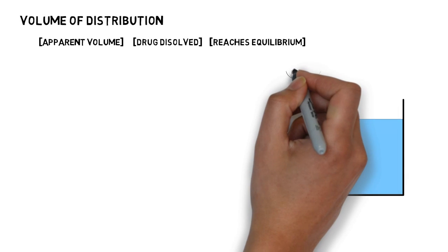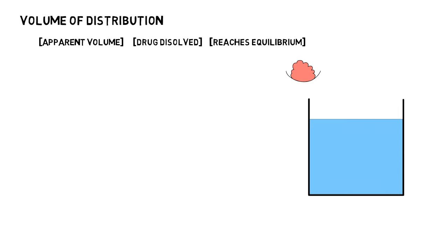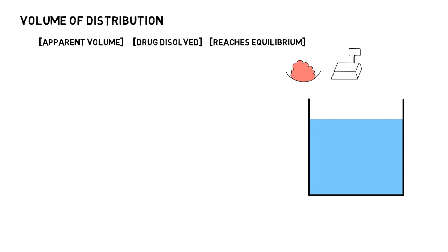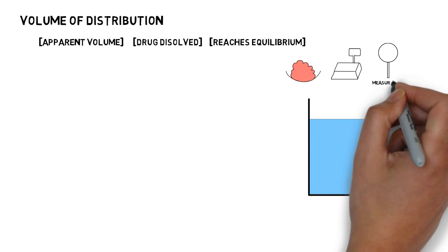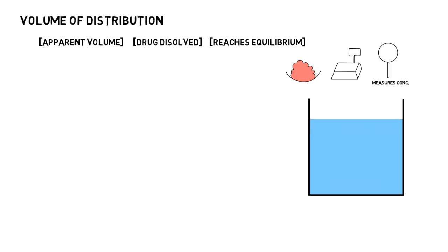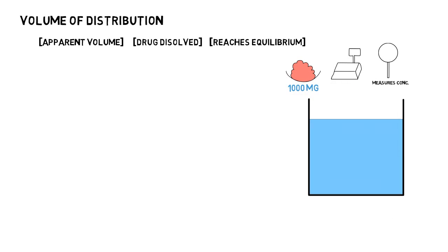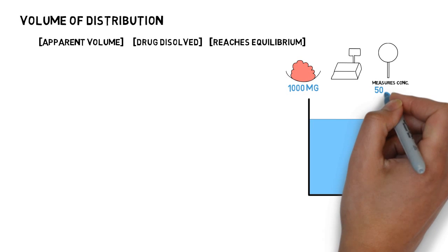Now I take some drug, I have a weighing machine and also an instrument which can measure concentration. Imagine I measure 1000 milligrams of the drug and I then dissolve it in the water in the container. I dissolve it completely and after it gets dissolved I measure the concentration — let's say I estimate it to be 50 milligrams per liter.